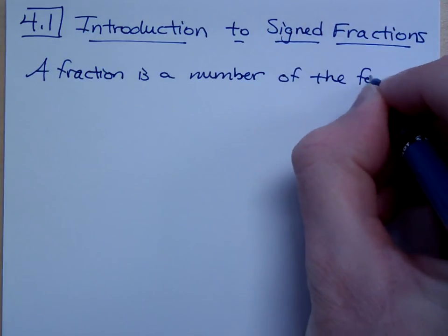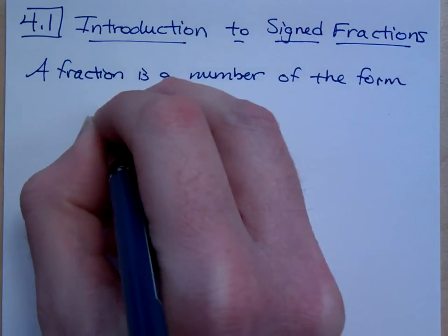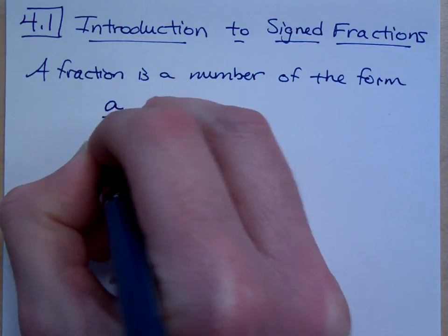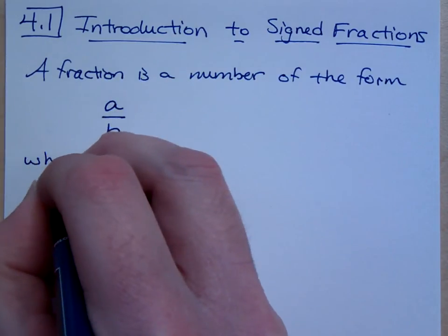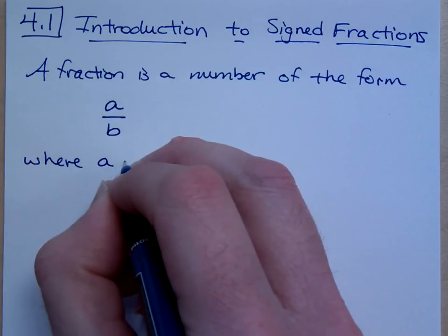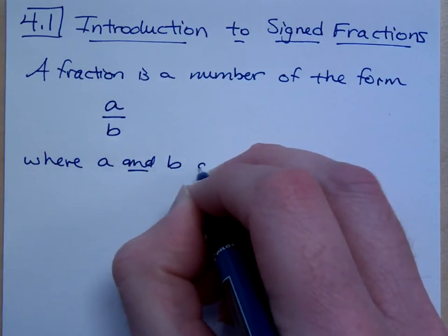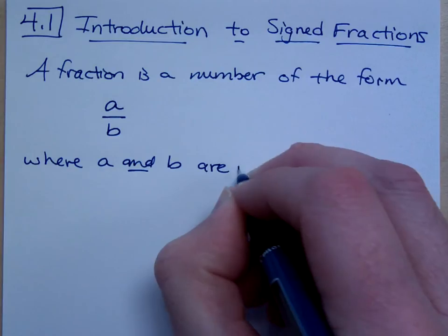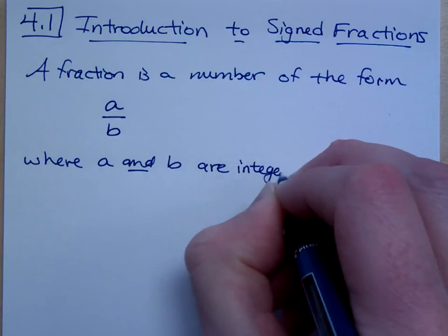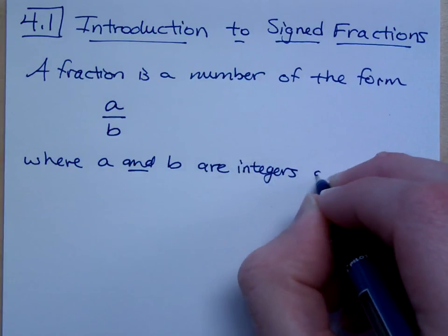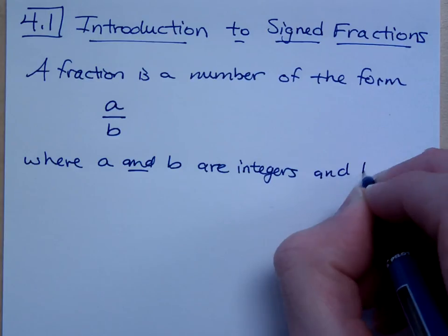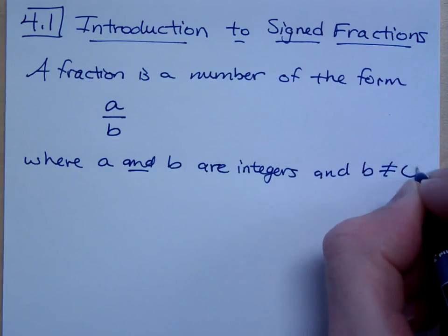Of the form a over b, where a and b are integers and b does not equal zero.